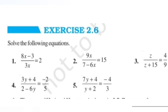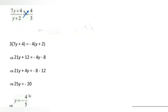Question number 5: solve (7y plus 4) upon (y plus 2) is equal to minus 4 upon 3. By cross multiplication: 3 times (7y plus 4) equals minus 4 times (y plus 2). Opening brackets: 21y plus 12 equals minus 4y minus 8. Writing variables one side: 21y plus 4y is 25y equals minus 8 minus 12, which is minus 20. So y is equal to minus 4 upon 5.